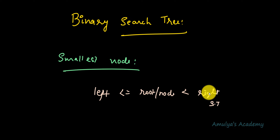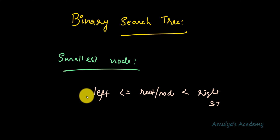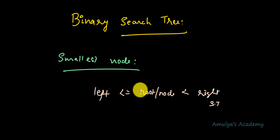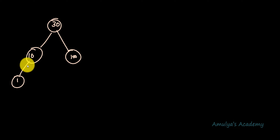Insertion of any new node in the binary search tree works like that. Now if I want to find the smallest value or smallest node in a given binary search tree, I need to search in the left subtree. And if the left subtree of the root node is null, then the value of the root node will be the smallest, as compared to the nodes in the right subtree.